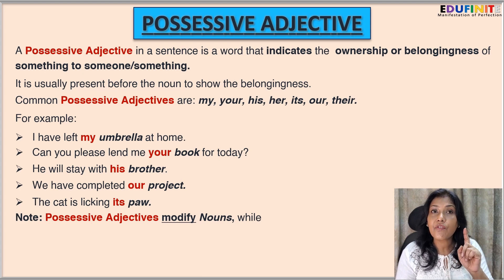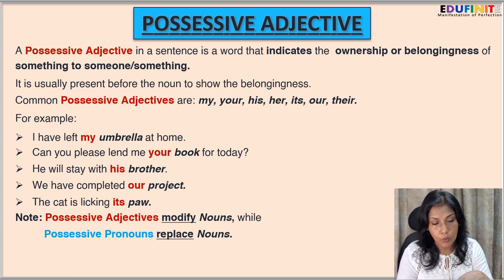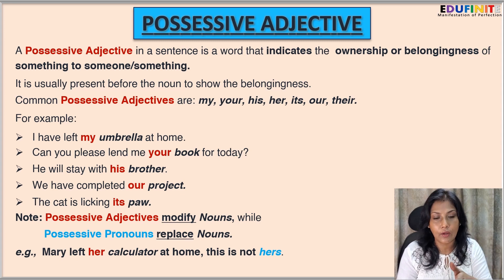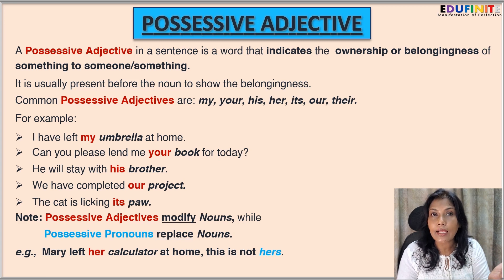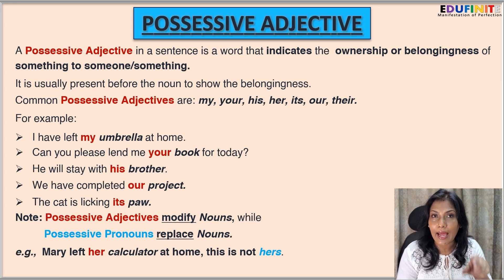Note: possessive adjectives modify nouns while possessive pronouns replace nouns. For example: 'Mary left her calculator at home. That is not hers.' In 'her calculator,' the word 'her' is the possessive adjective because it is followed by the noun 'calculator.' In the second part, 'this is not hers,' the word 'hers' is the possessive pronoun — it replaces the noun 'calculator,' so there is no noun after it.